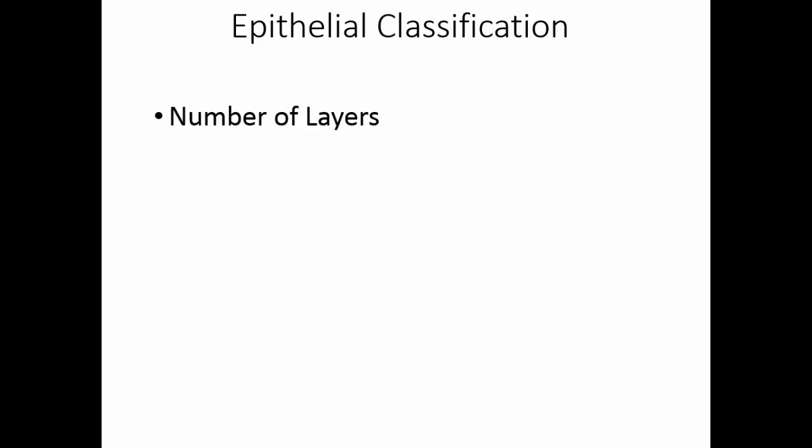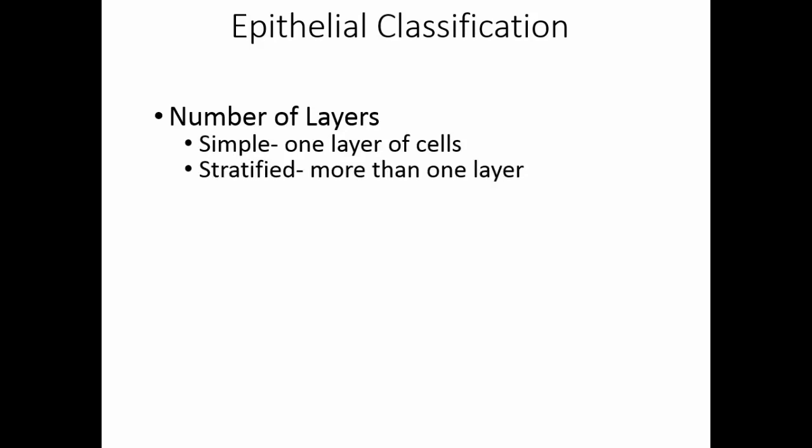Epithelial tissues are involved in excreting products we no longer want or in forming substances that we need to secrete. Epithelial tissues can act as filters and they also compose glands and many of our sensory receptors. We can classify epithelial cells in two ways. One is the number of layers. A simple epithelium has a single layer of cells, and a stratified epithelium has more than one layer of cells.